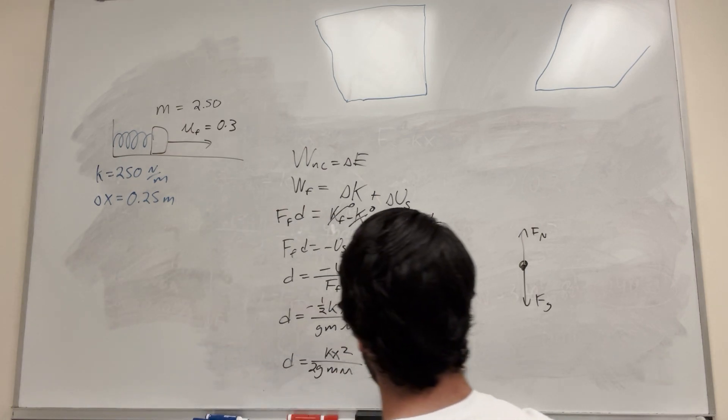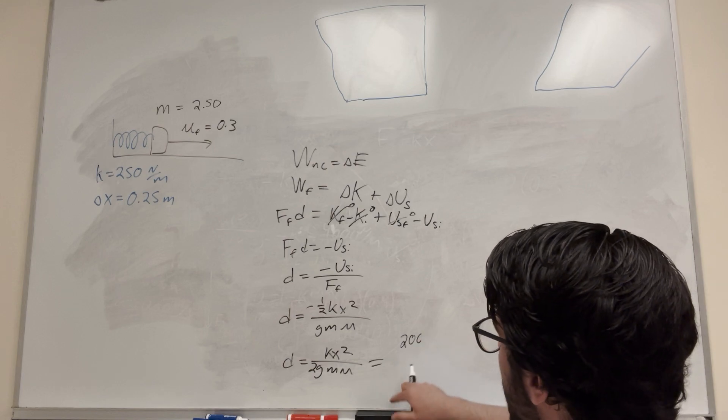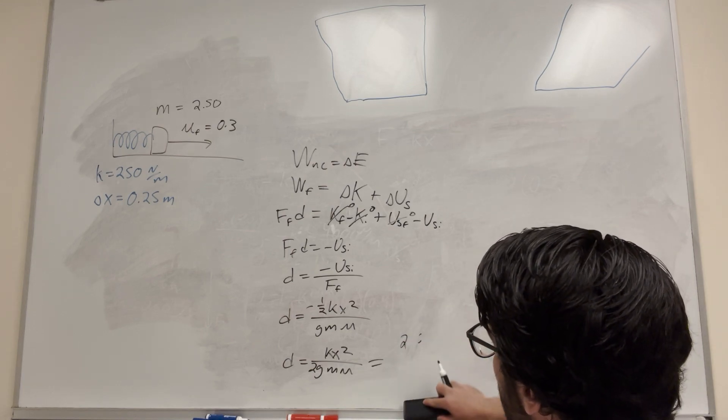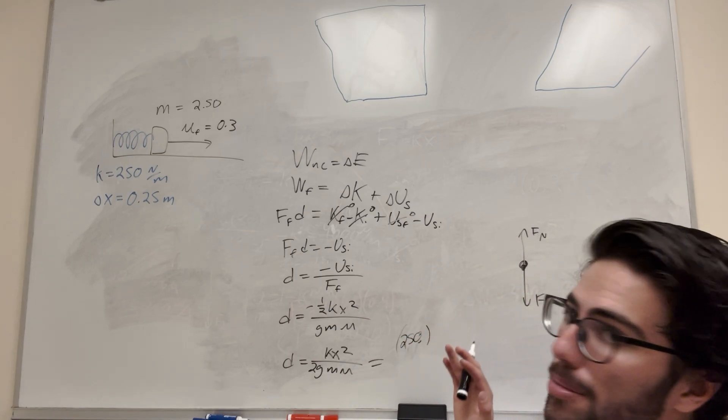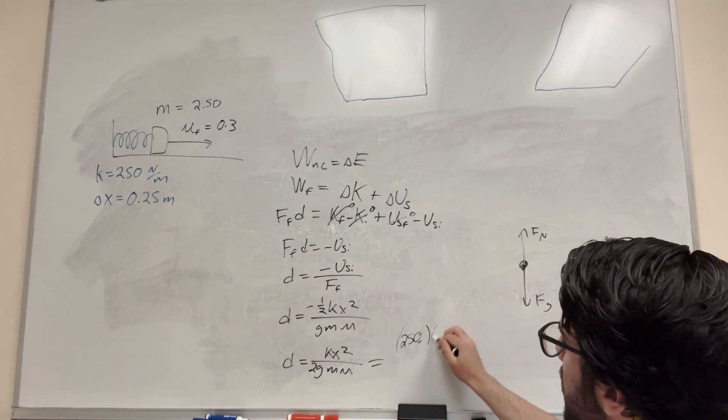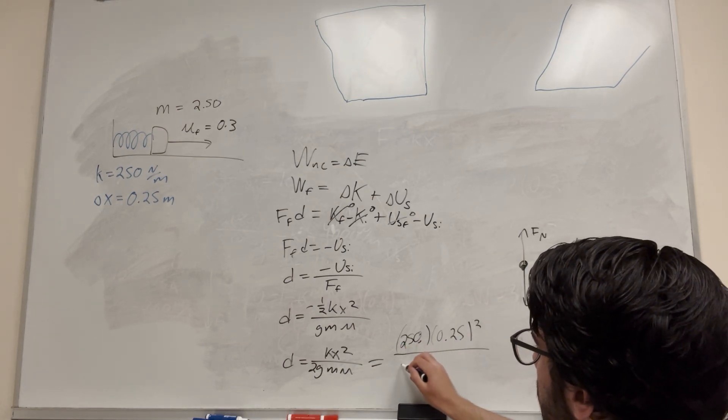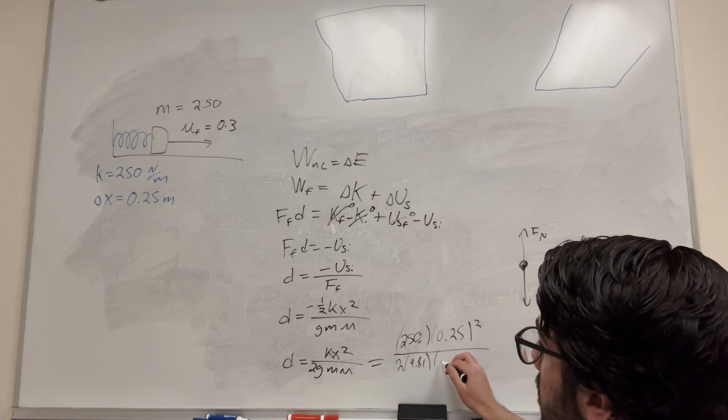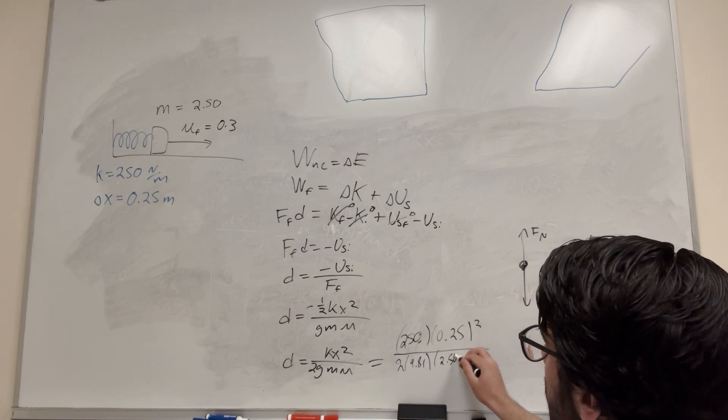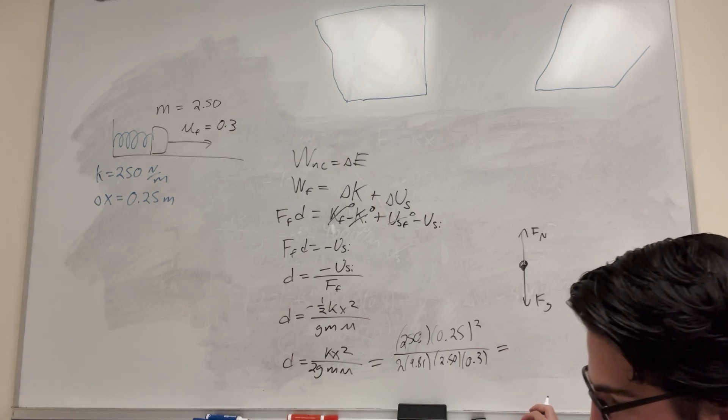So then if you plug all this in, what we're gonna do now, so it's gonna be 250 times its position, or its compression distance, which is our 0.25, and square that, and all of that over 2 times 9.81 times its mass, which is 2.50 times its coefficient of friction, 0.3.